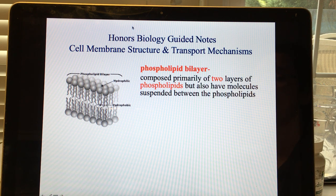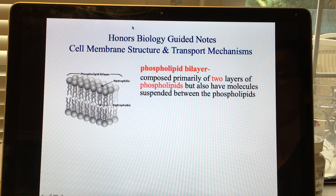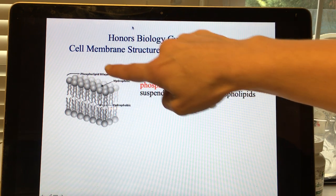A bilayer means two layers. Phospholipids have hydrophilic heads, which are polar and attracted to water, and hydrophobic tails, which are repelled by water. So phospholipids in a watery environment will form two layers with the tails away from the water and the heads towards the water.